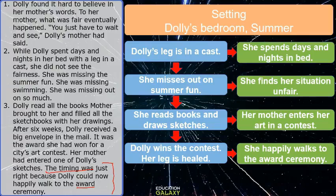So the setting of this story, the events, and how Dolly reacted helps you understand the story better. Now you know the importance of Dolly spending all that time in her bedroom that summer — it was to heal and to win the art contest. So in the future, when you read stories, pay attention to where and when the story takes place, and think about why the author may have chosen that setting.